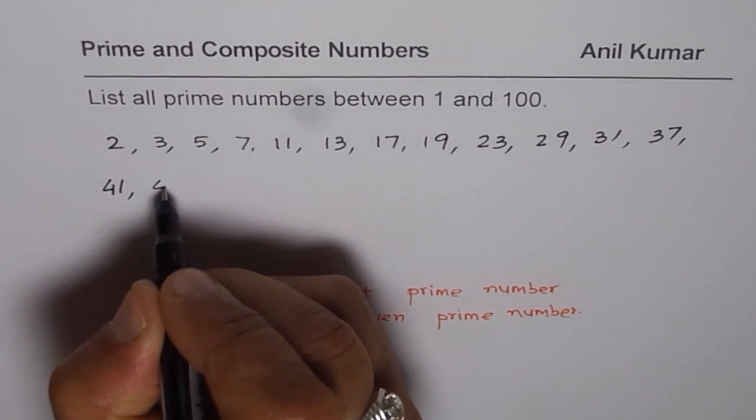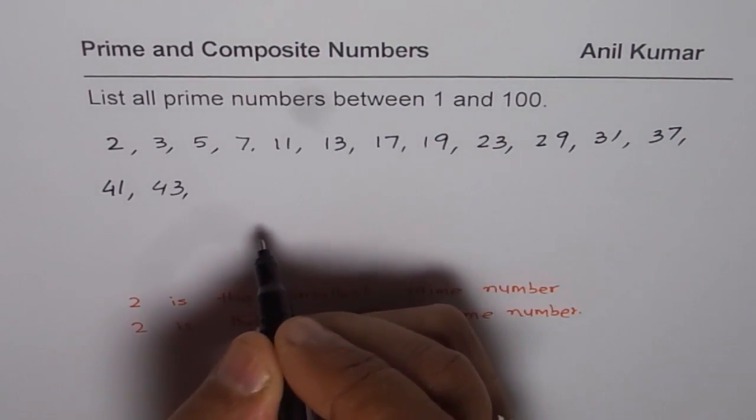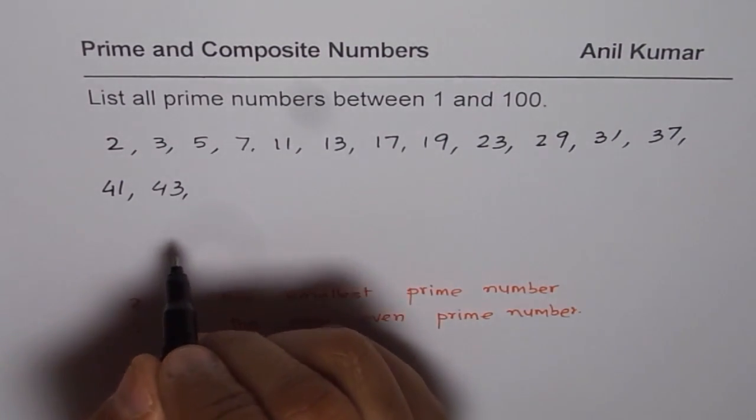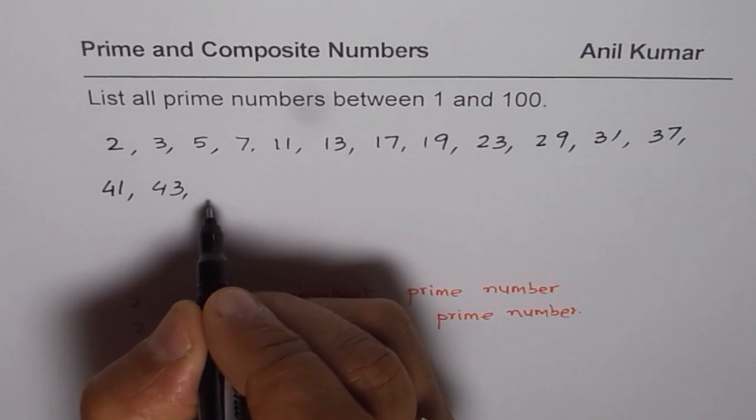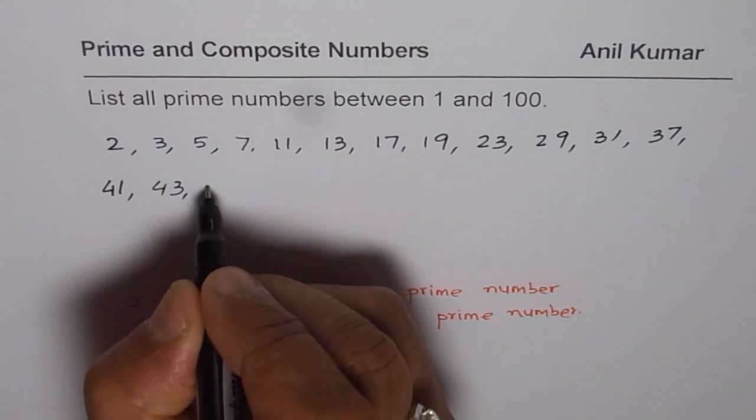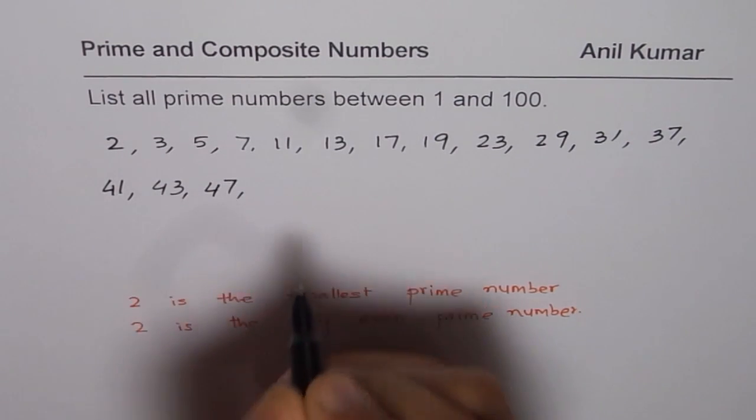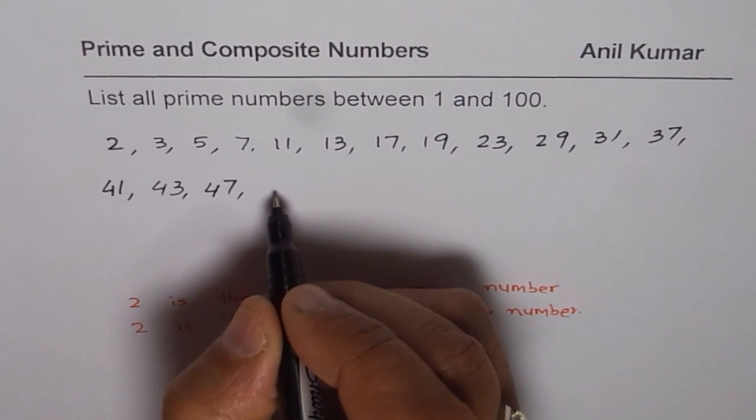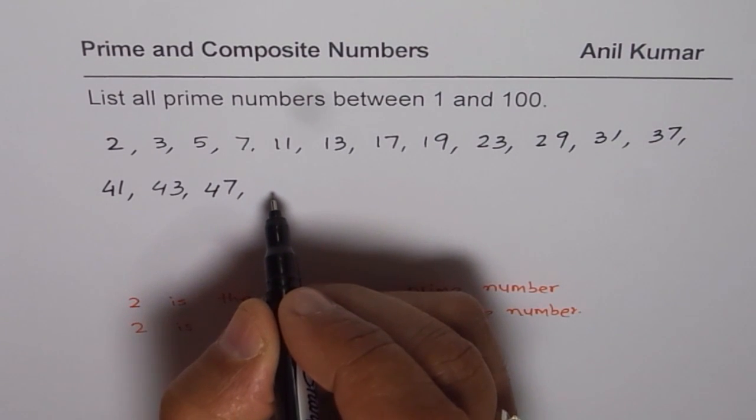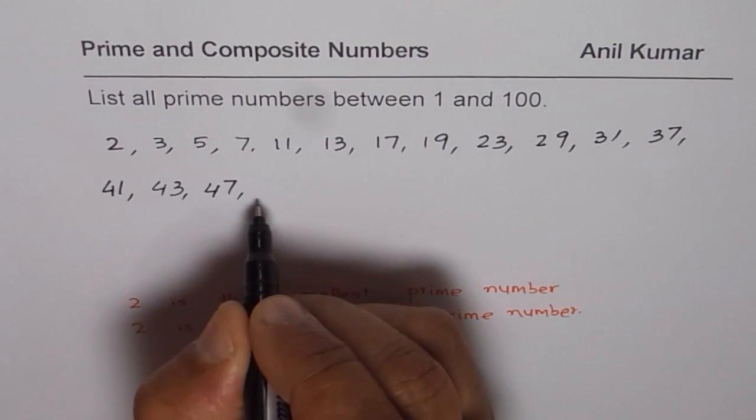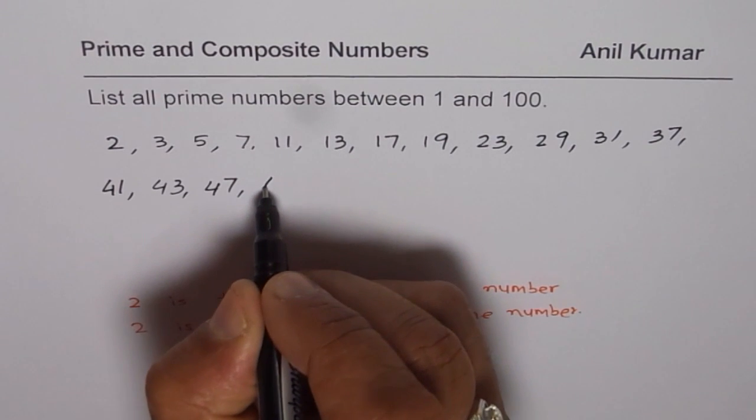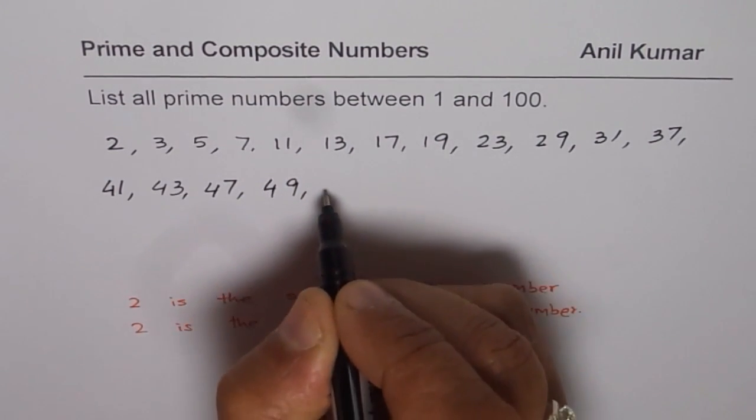42 is even. 43, 4 plus 3 is 7, seems to be a prime number. We'll check our list again. 44 is even. 45 can be divided by 5. 46 is even. 47 seems to be a prime number. 48, 49 - 7 times 7 is 49, so 49 is not prime. 48 is even.